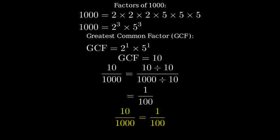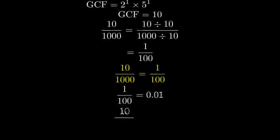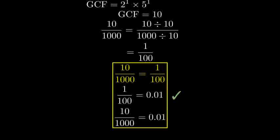We can also write this as a decimal. One over one hundred equals zero point zero one. Let's verify our answer. Ten divided by one thousand equals zero point zero one, and one divided by one hundred also equals zero point zero one. Therefore, we have successfully simplified our fraction.